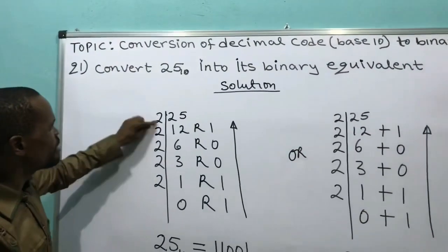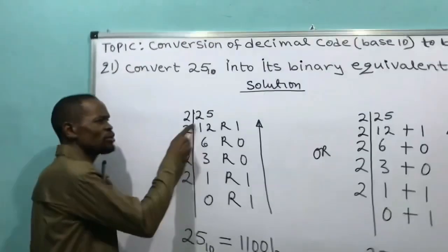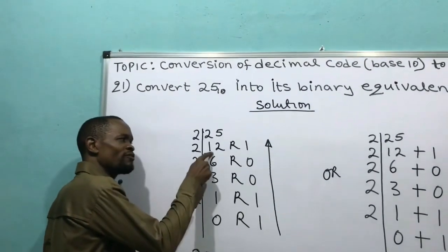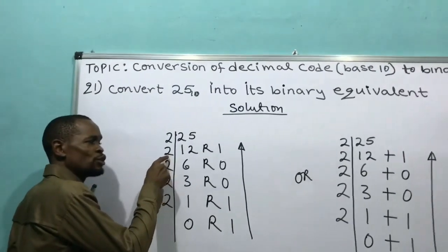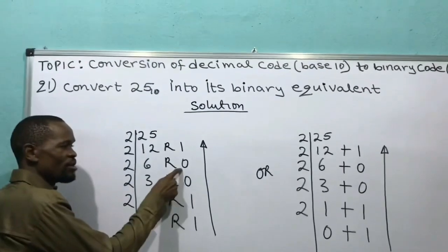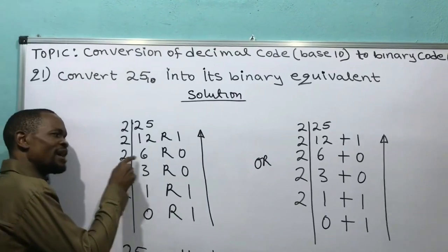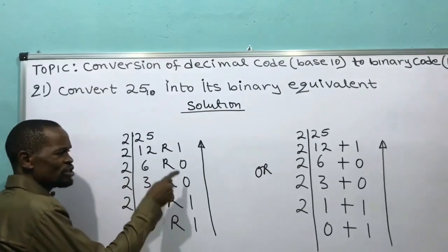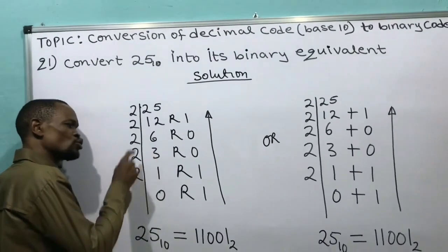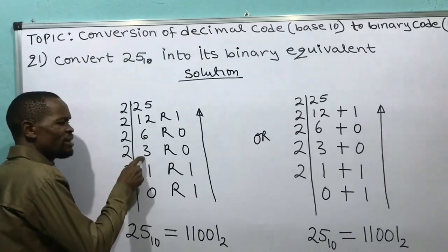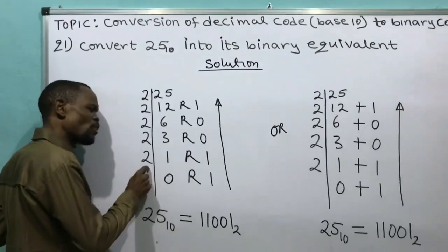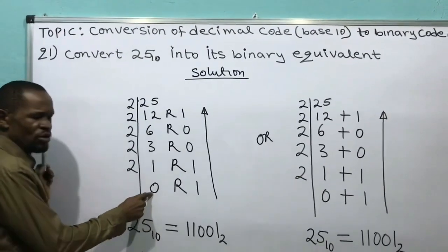So: 2 divided into 25 gives me 12, remainder 1. Then 2 divided into 12 gives me 6, remainder 0. 2 divided into 6 gives me 3, remainder 0. 2 divided into 3 gives me 1, remainder 1. And 2 divided into 1 gives me 0.